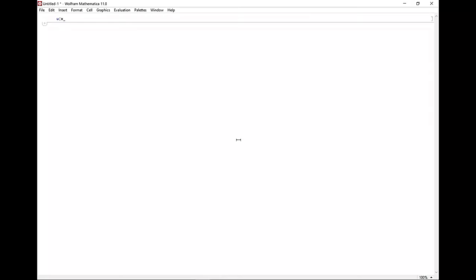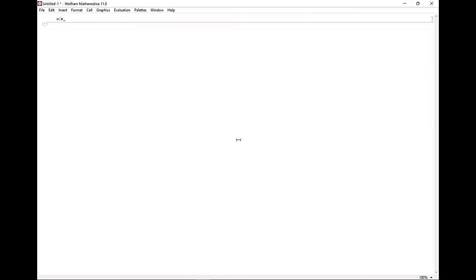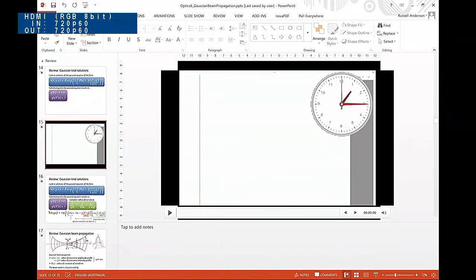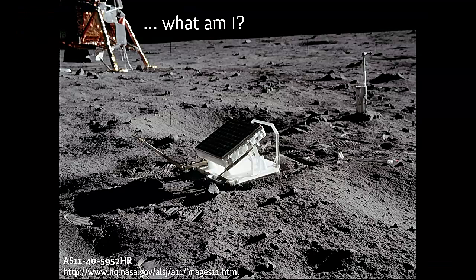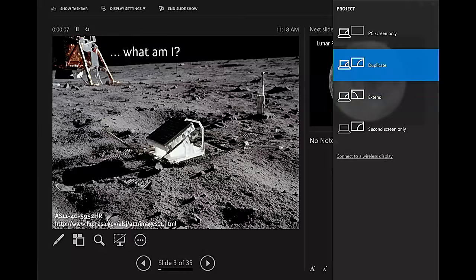So what we're going to do instead is move on to where we were halfway through last lecture, which was to show what the effect or the consequence of making a complex radius of curvature was.